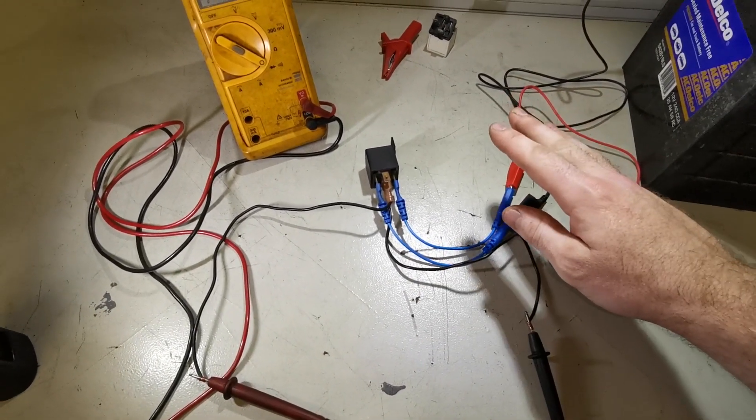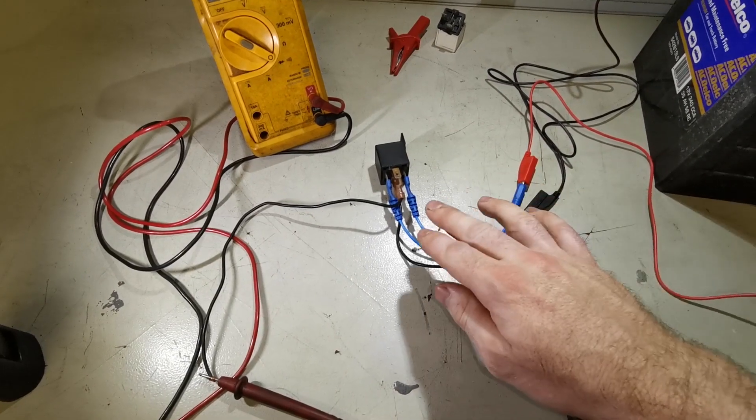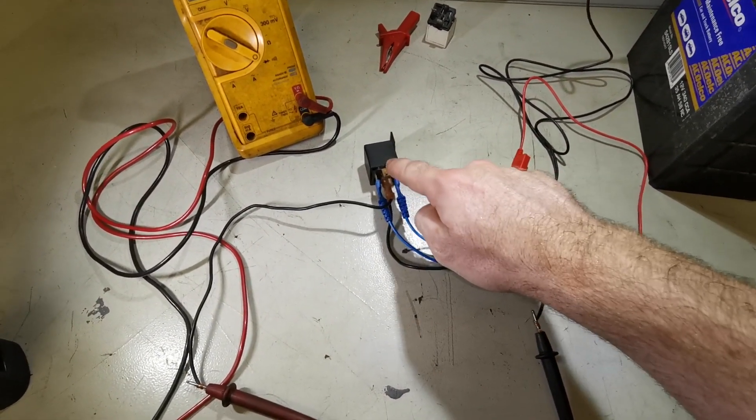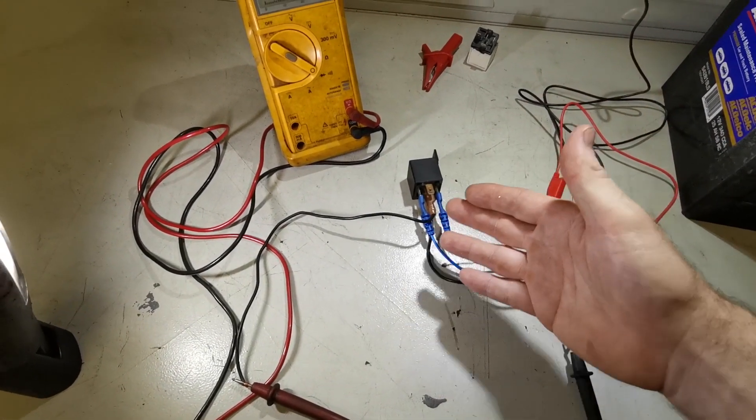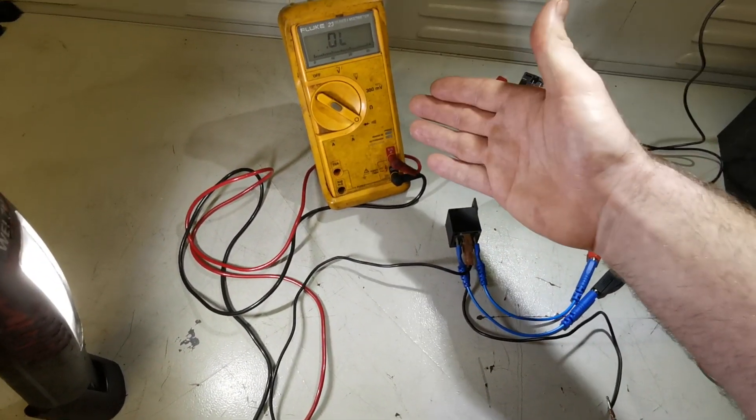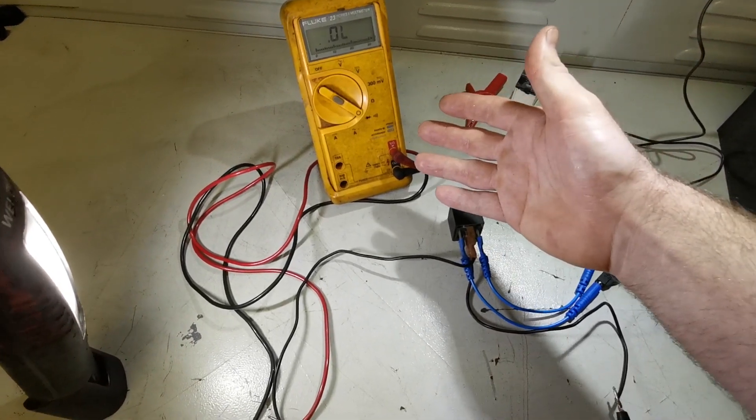So the way it gets set up is 85 and 86 is your power feed on your relay. 85 and 86 goes to the battery and then 30 and 87 goes to the continuity side on the multimeter.